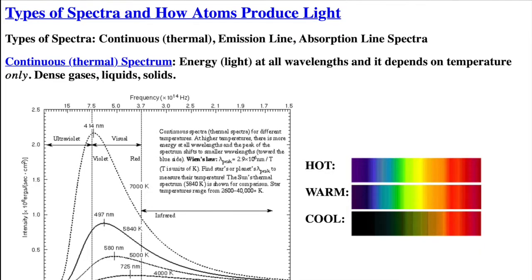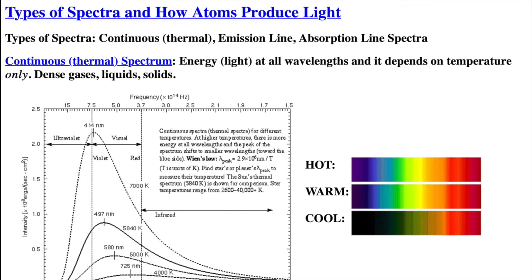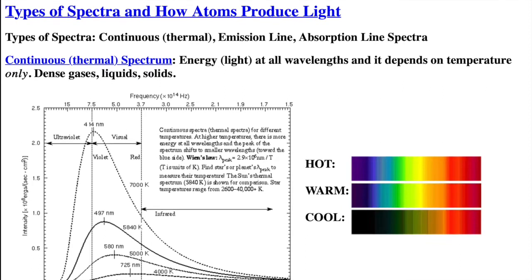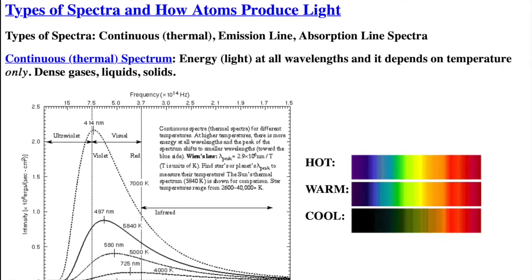There are three basic types of spectra: a continuous spectrum, an emission line spectrum, and an absorption line spectrum. A continuous spectrum, also called a thermal spectrum, has energy, light, at all wavelengths.